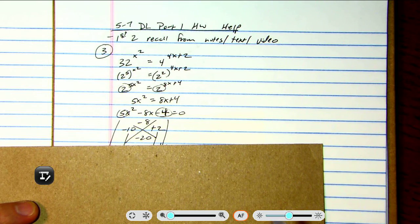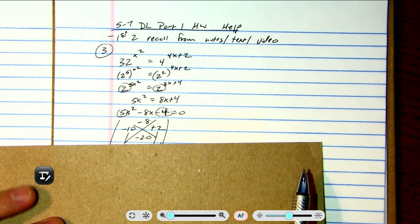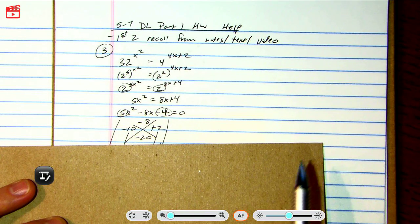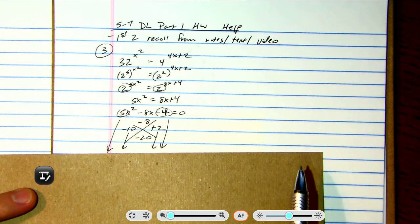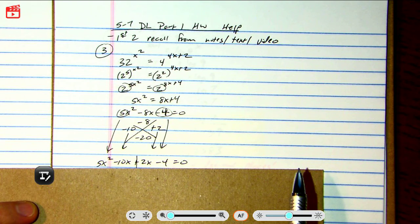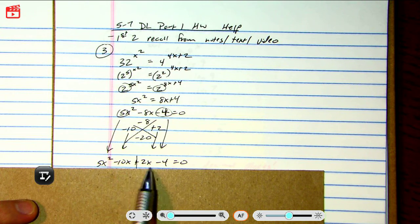Bring down the negative 10. You see how negative 10x plus 2x equals negative 8x? I'll write it out like that. Bring down the 5x squared and the negative 4 on the outside, and then the negative 8x is just rewritten like this.